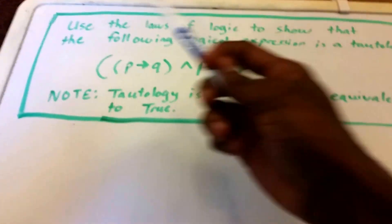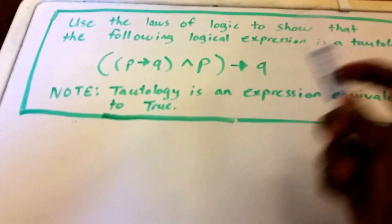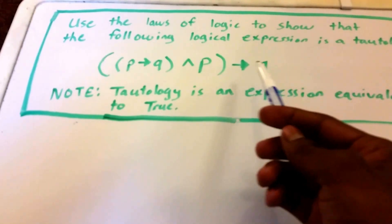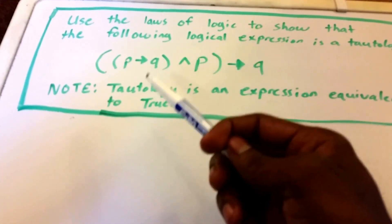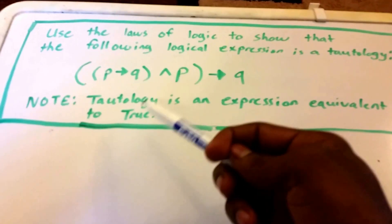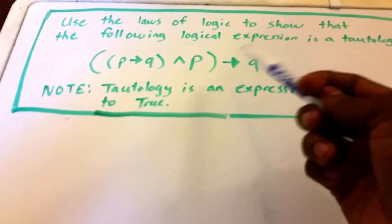We want to use the laws of logic to show that the following logical expression is a tautology. So here's the following logical expression: P implies Q and P implies Q. And we want to show that it's a tautology, which means that this statement equates to true.